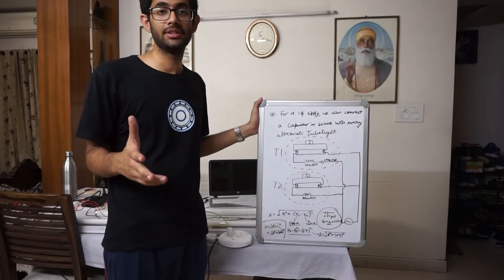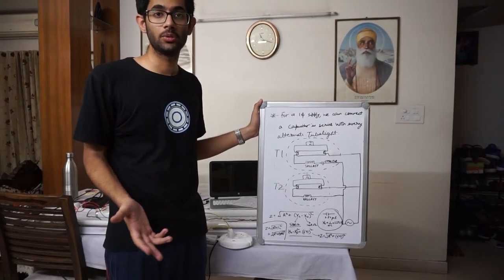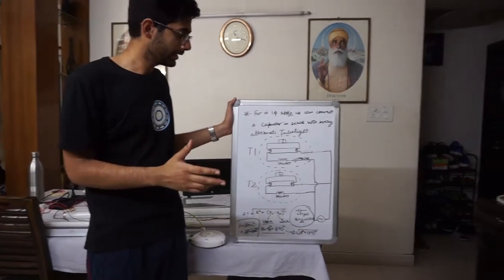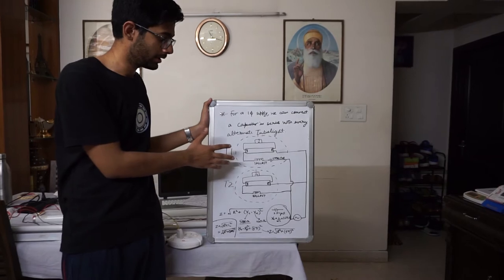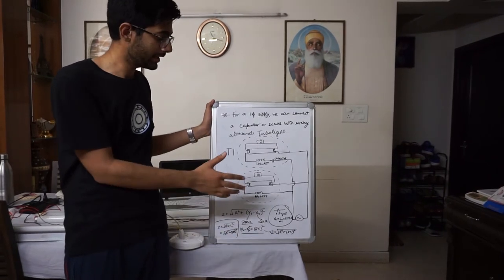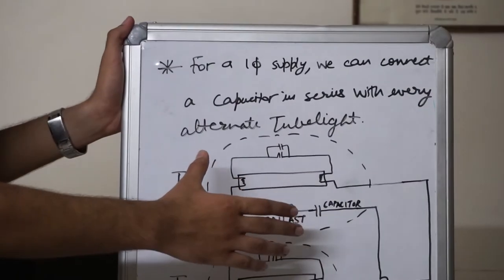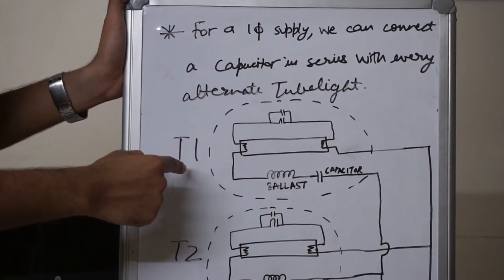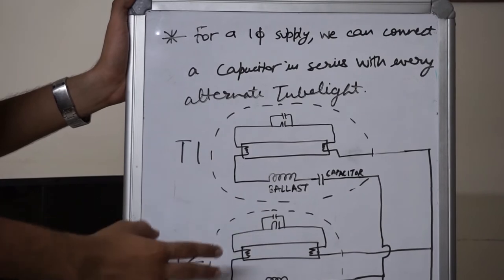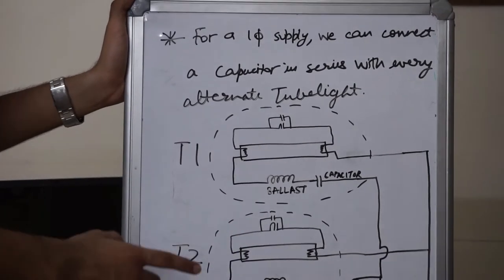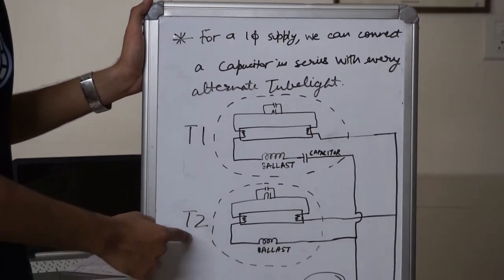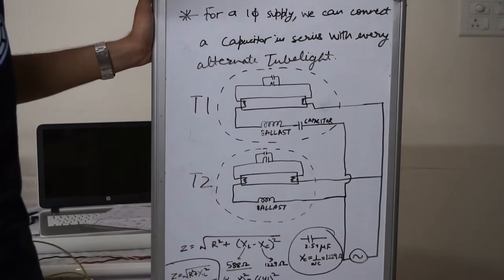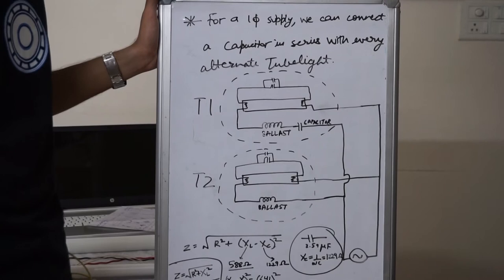If we have a single phase supply and we want to eliminate the stroboscopic effect, we can make use of capacitors. We can connect capacitors to alternate tube lights such that we have phase shift and the voltage reaching T1 is out of phase from the voltage of T2. So when the brightness of T2 is very low, T1 has some brightness and the net brightness is not zero, thereby eliminating the stroboscopic effect.